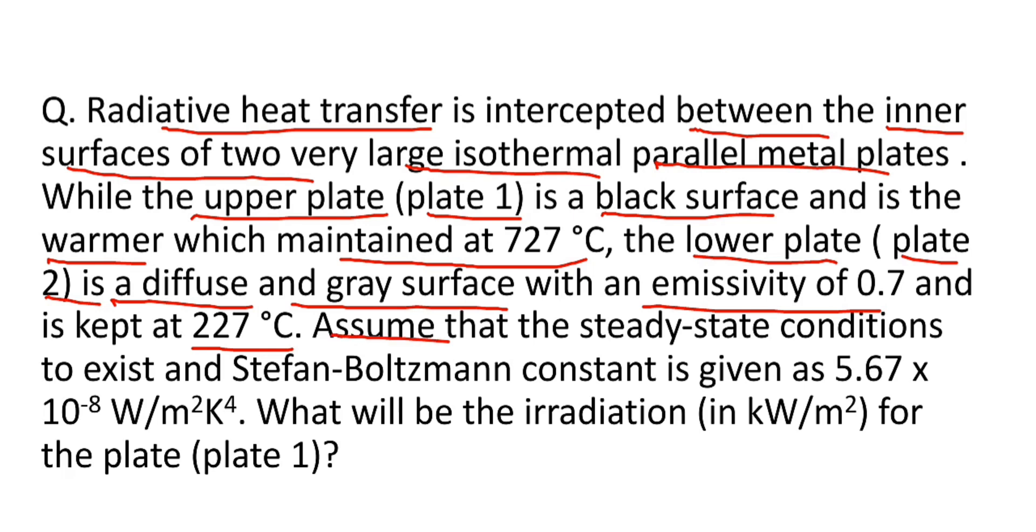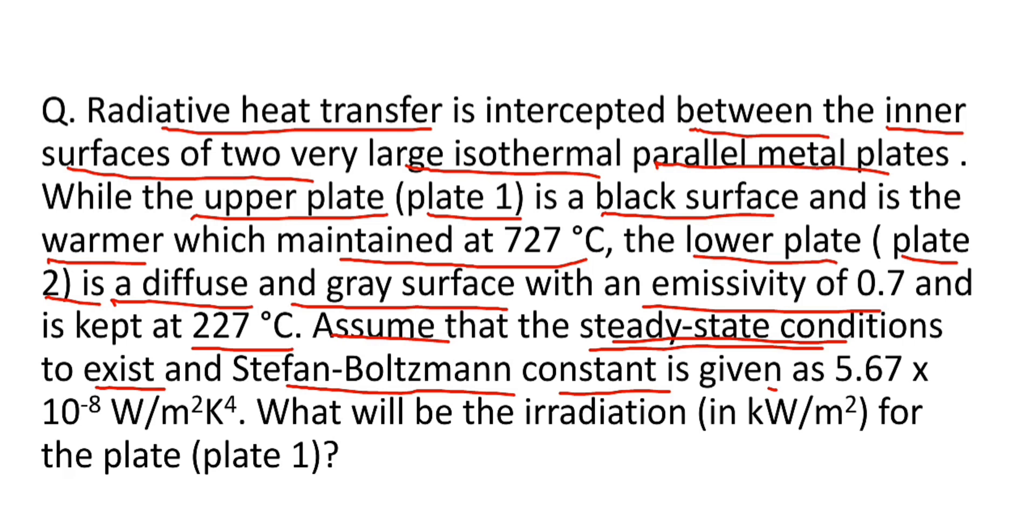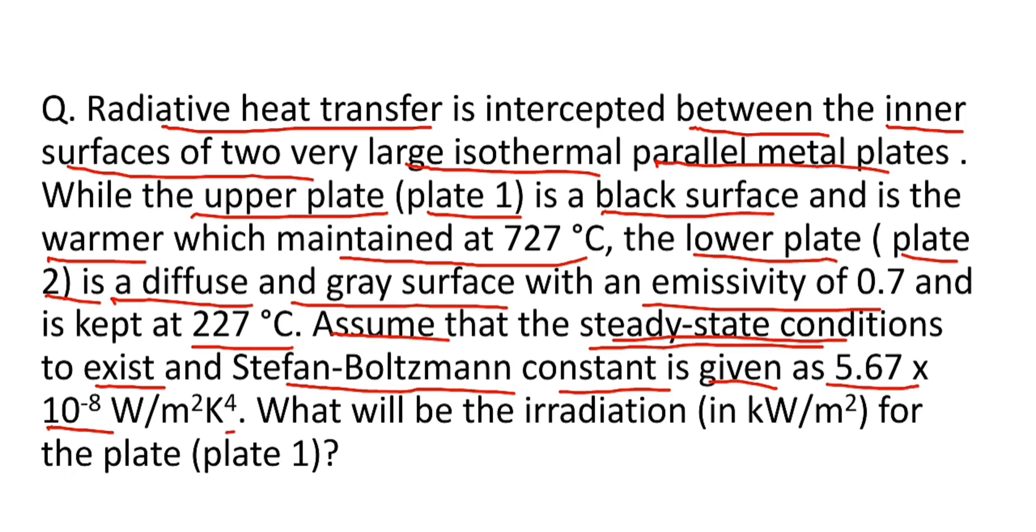Assume that steady-state conditions exist here, and the meaning of steady-state condition is heat transfer is constant with respect to time. Here Stefan-Boltzmann constant is given and it is equal to 5.67 × 10⁻⁸ W/m²K⁴. We have to find the value of irradiation for plate 1 in terms of kilowatt per meter square, that is irradiation per unit surface area.